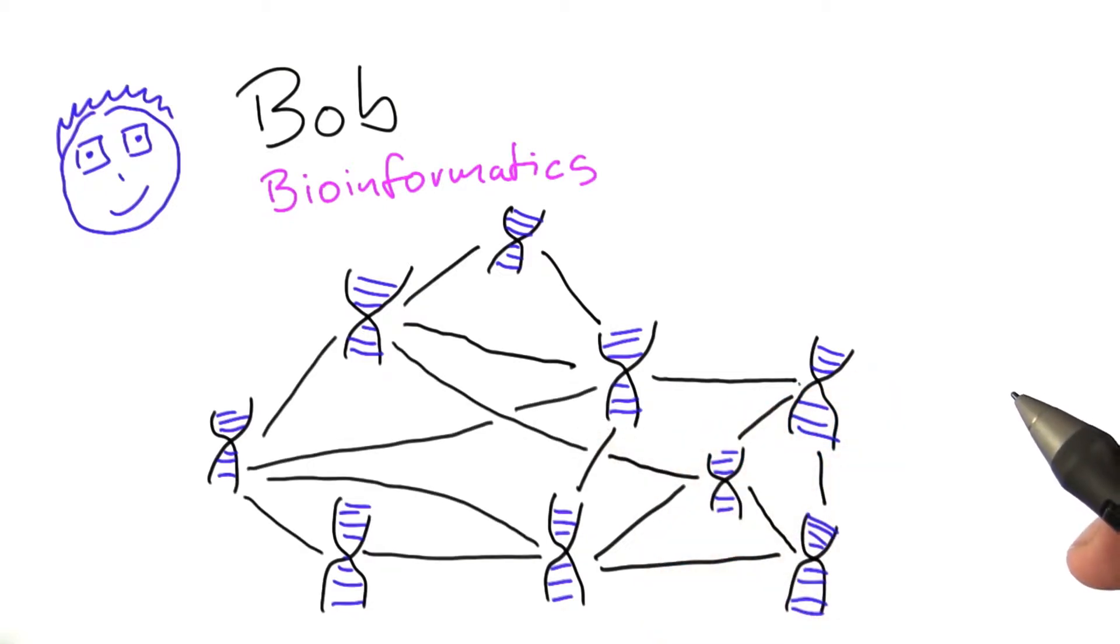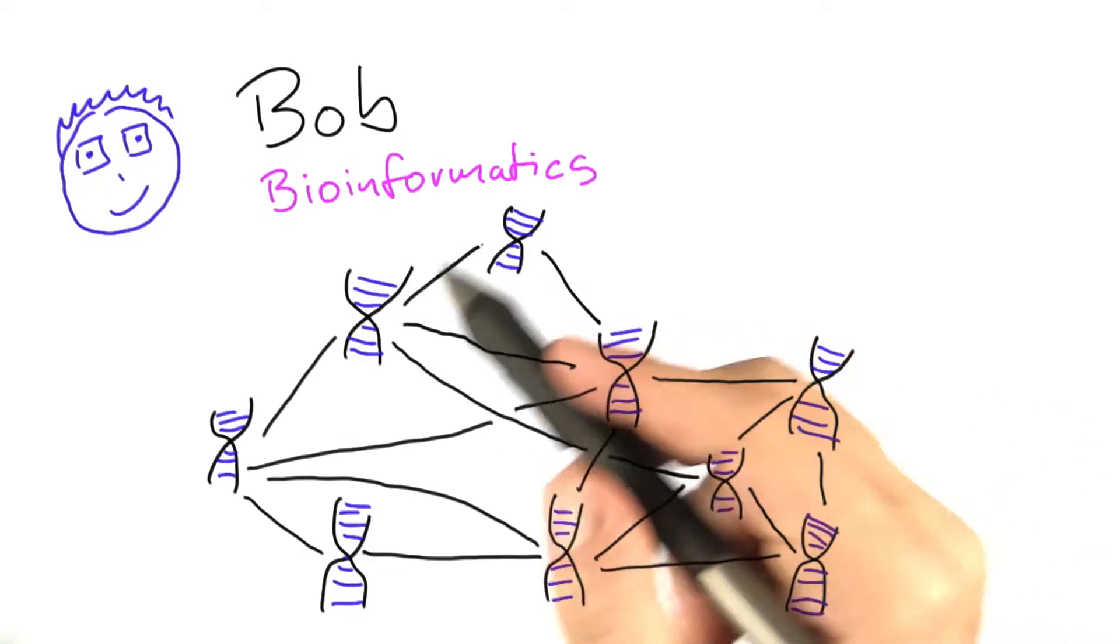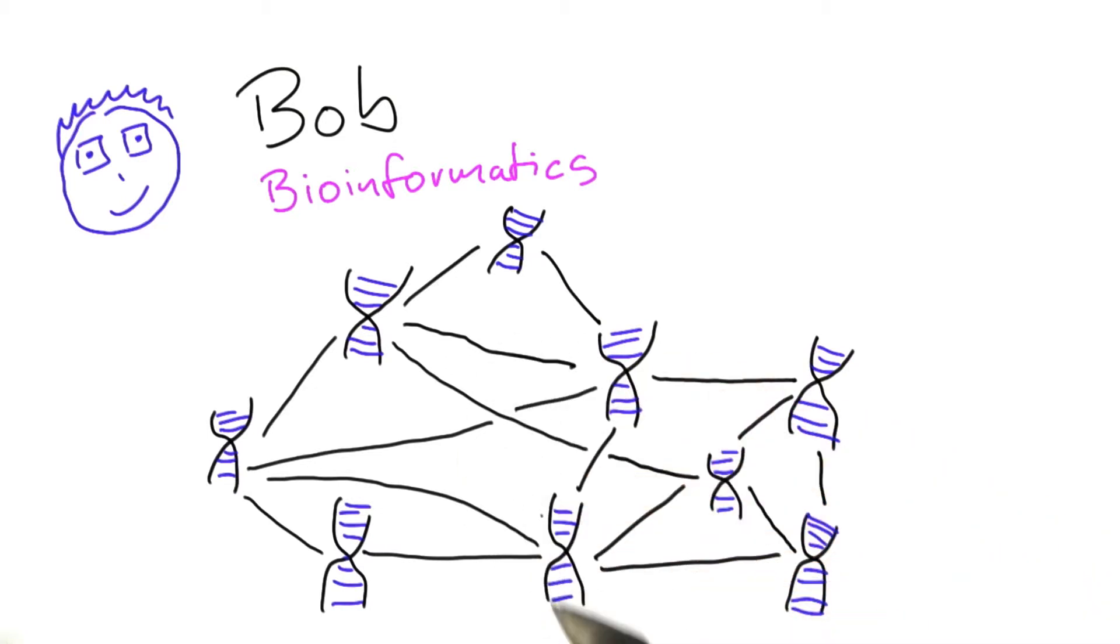And so since Bob is trying to figure out which groups of genes work together, what he's basically looking for is a collection of genes that are all connected to each other.